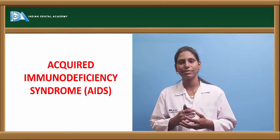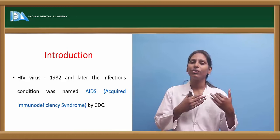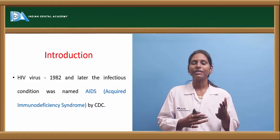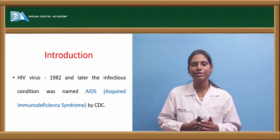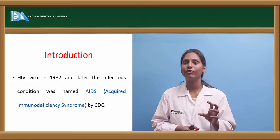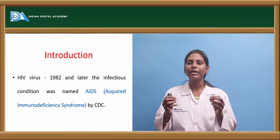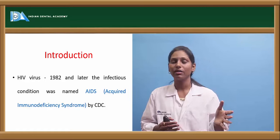Acquired immunodeficiency syndrome (AIDS) has been a global concern since its first discovery in 1981. The HIV virus itself was identified in 1982, and the CDC (Center for Disease Control) named the condition acquired immunodeficiency syndrome. It is called immunodeficiency because HIV attacks CD4 T-lymphocytes — it is therefore also called a T-lymphotropic virus — and since lymphocytes are responsible for immunity, this virus leads to immune deficiency.